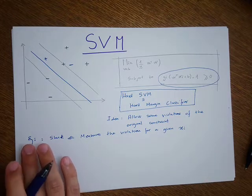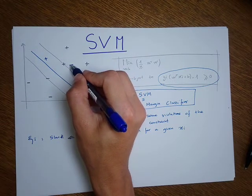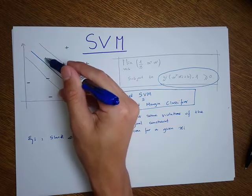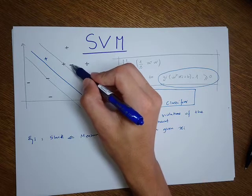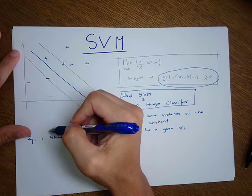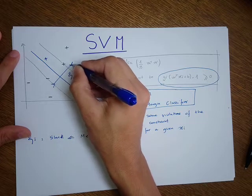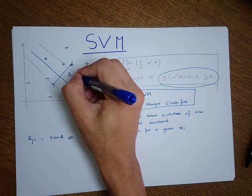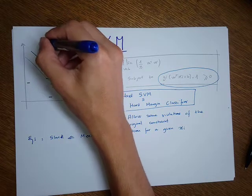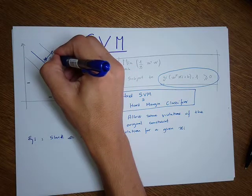What does the slack represent visually? Let's take a training sample that is incorrectly classified. This negative training sample normally should be on the left side of the margin — the distance it violates is ξ₁. For a positive example that should be on the right side of the margin but isn't, that amount of violation is ξ₂. So we have two misclassified or margin-violating samples in this example.